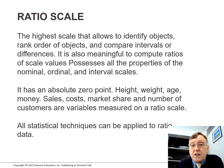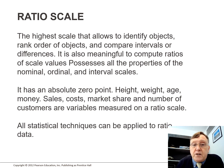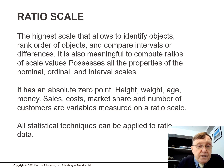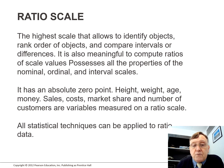The ratio scale is the highest scale, allowing you to identify objects, rank order objects, and compare intervals or differences. It is also meaningful to compute ratios of scale values. It possesses all of the properties of the nominal, ordinal, and interval scales, and it has an absolute zero point. Height, weight, age, money, sales, cost, market share, and number of customers are variables measured on a ratio scale. All statistical techniques can be applied to ratio data.